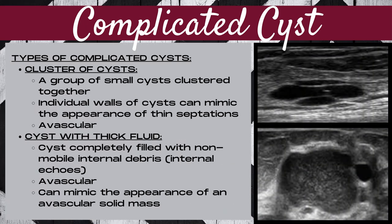The third type of complicated cyst is a cluster of cysts — a group of small cysts clustered together, like a cluster of grapes. The individual walls of the cysts can mimic the appearance of thin septations. A cluster of cysts should be avascular.